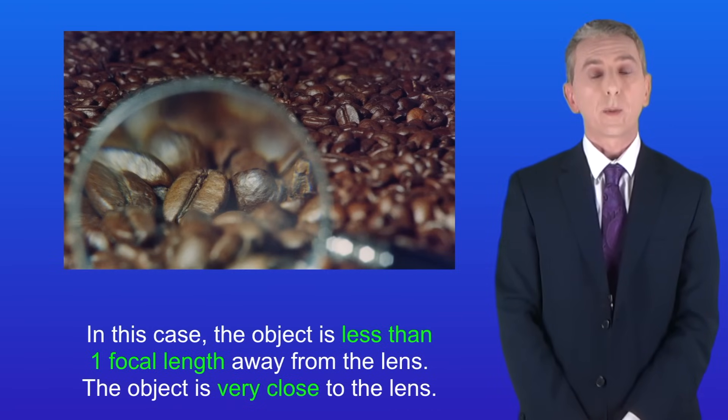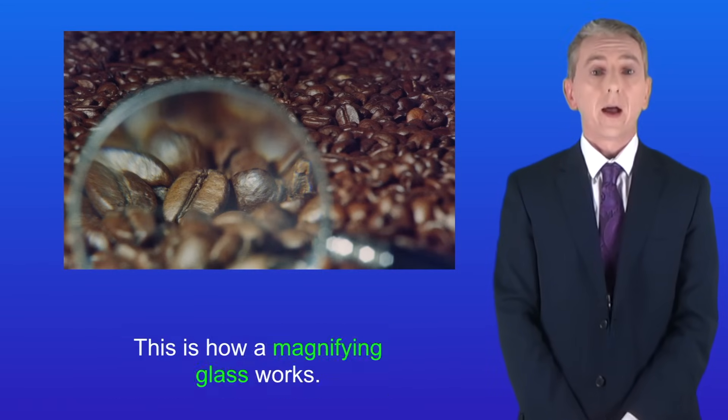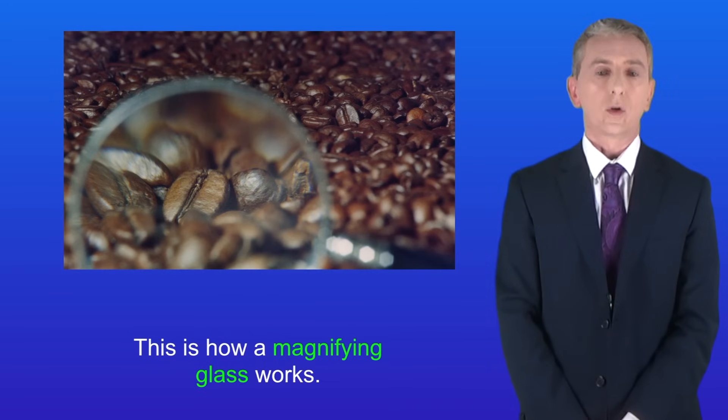So in this video we're looking at a third possibility. In this case the object is less than one focal length away from the lens. In other words the object is very close to the lens and this is how a magnifying glass works.